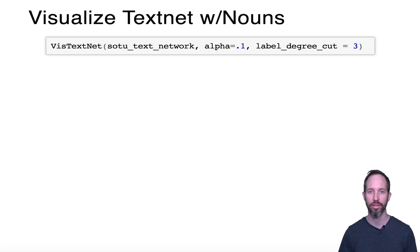So first let's try out the text net with nouns and let's try an author-based projection. So here the goal is to see if we can group presidents according to similarities in the types of nouns that they are using.